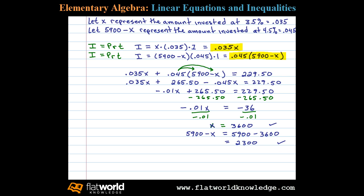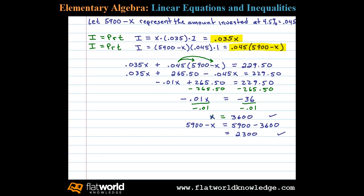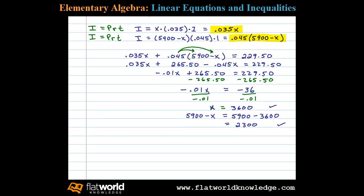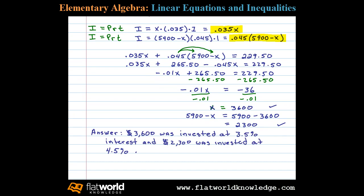Now all that's left to do is answer the question in a sentence. Three thousand six hundred dollars was invested at three point five percent interest, and two thousand three hundred dollars was invested at four point five percent interest.